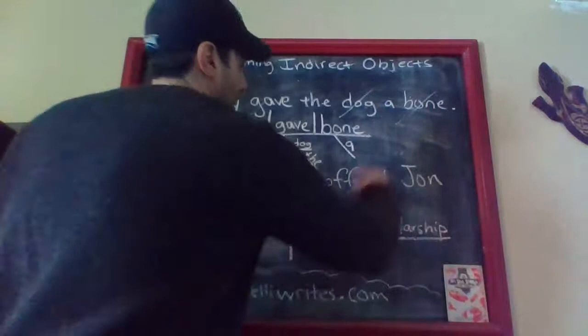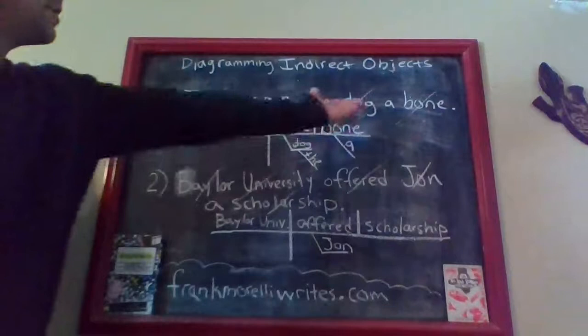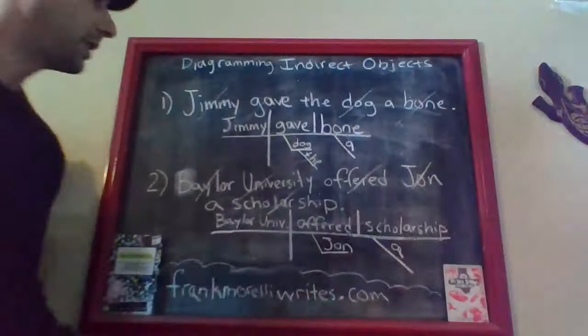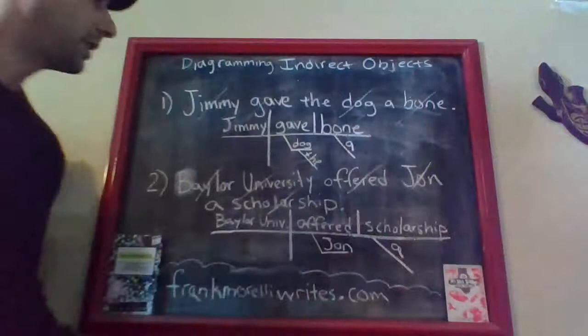Draw your little dog leg line and put 'John' on it. Let's go back and make sure we've used all the words: Baylor University, offered, John, scholarship — all on the list. There's only one word left, which is the article 'a,' describing which scholarship — 'a scholarship.' Draw your slanted line and put 'a' on it, and there you have yourself another beautiful diagram. Hope you enjoyed another day of diagramming — I'll be back with more, adding a little bit more to the diagramming chart in the future. Stay safe and stay healthy.